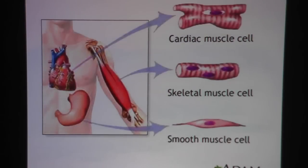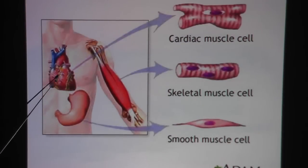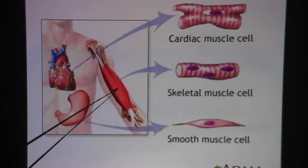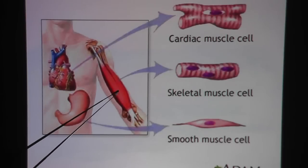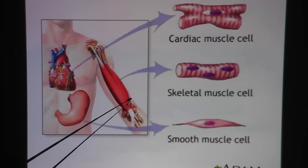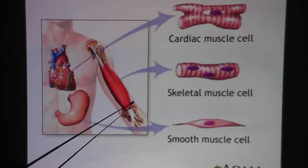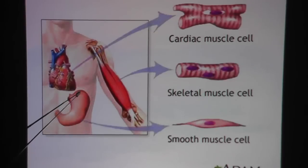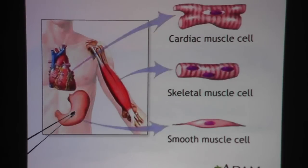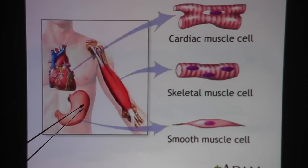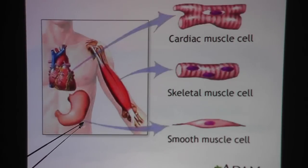Let's look at the location in the body. The heart has cardiac muscle. Skeletal muscles are muscles that we can consciously contract. And anything that has a hollow organ — in the walls of hollow organs, we will find smooth muscle tissue.